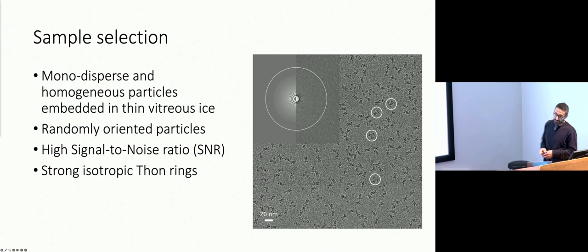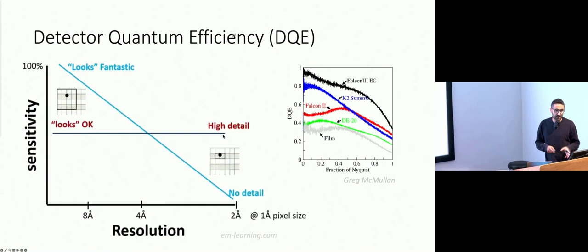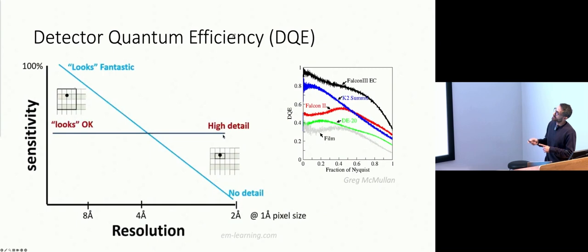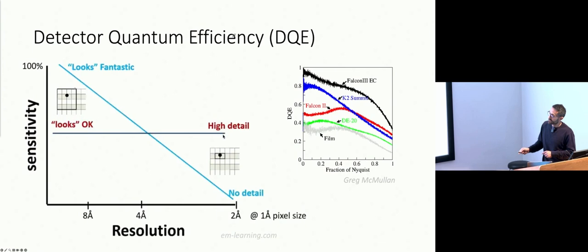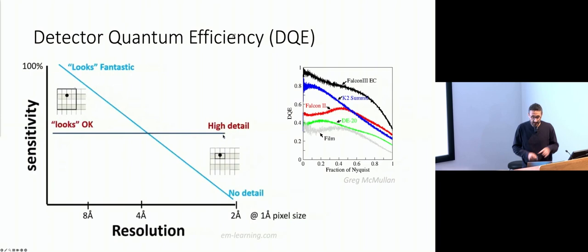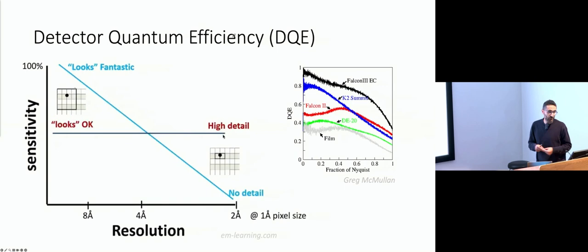Once you have selected the right sample, the next question is the detector. Greg yesterday already spoke about detectors and how they work. The key thing to take into account is the DQE — Detector Quantum Efficiency. In layman's terms, the DQE tells us how good our detector is as a function of spatial frequencies, with the highest spatial frequencies being our Nyquist, which is twice the pixel size.